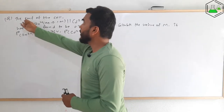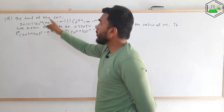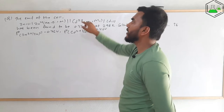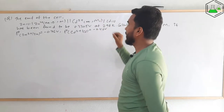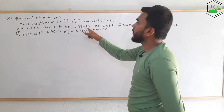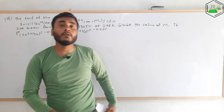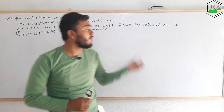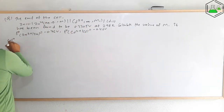Now let's see another numerical problem. The cell notation shows zinc converting to zinc ion at 0.1 M, a salt bridge, and cadmium ion at concentration m1 (unknown) converting to cadmium solid. The EMF of the cell has been found to be 0.3305 V at 298 K. We need to calculate the value of m1. The standard electrode potentials of both electrodes are provided.